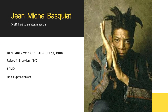Jean-Michel Basquiat was an American artist who is famous for his graffiti and painting works. His style can be classified as neo-expressionism and it covers topics like race, poverty, inequality, and history. Basquiat was born on December 22, 1960. His family lived in New York City, primarily in Brooklyn.